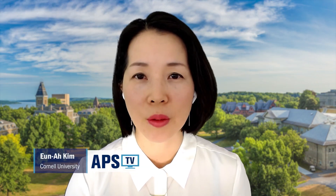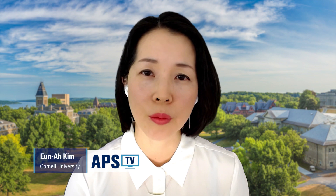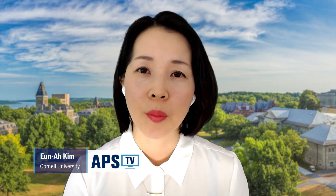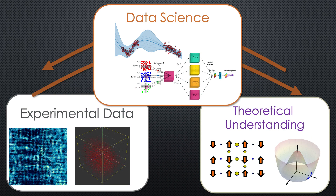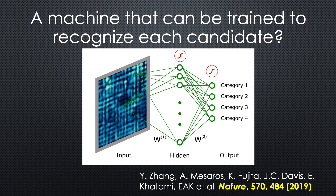My lecture is about how quantum matter research is getting reshaped by the data revolution and how we can harness this data revolution to get to new discoveries and make dramatic progress using machine learning. Seeking scientific understanding is about trying to find the mapping between data and theory. As the data space becomes larger and more complex, it becomes natural to make use of machine learning tools and data science tools that are designed to find complex functions in large dimensional spaces.